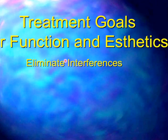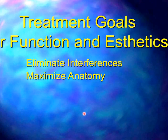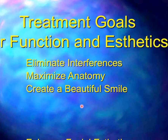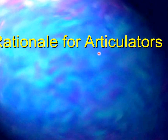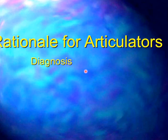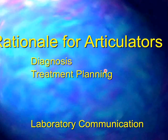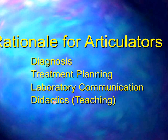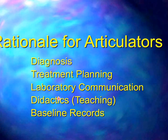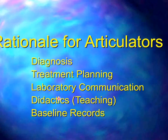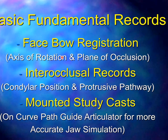Treatment goals for both function and aesthetics include eliminating harmful interferences, maximizing anatomy for chewing efficiency, stability, and longevity, and creating a beautiful smile to enhance facial aesthetics. The rationale for articulators includes diagnosis — do we have any interferences — developing a treatment plan, analyzing the anatomy, communicating with the laboratory, teaching, and most importantly, establishing a baseline record of what you did and how the patient is surviving afterward. Basic fundamental records would be a face bow registration for the axis of rotation and steepness of the plane, an interclusal record for condyle position and protrusive pathway, and mounted study casts on a curved-path articulator for more accurate jaw simulation.